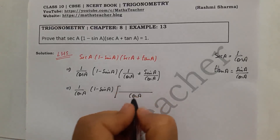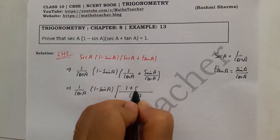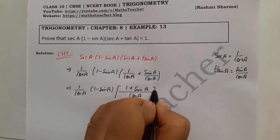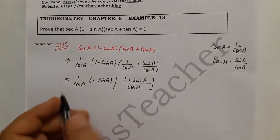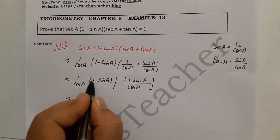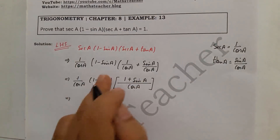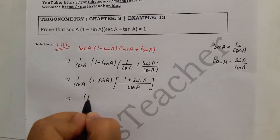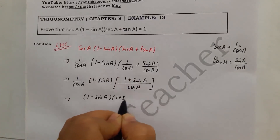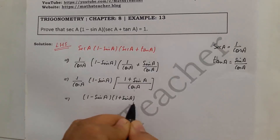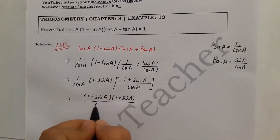When both denominators are the same, we combine the numerators: 1 plus sin a over cos a. Now we write the full expression: 1 by cos a into (1 minus sin a) into (1 plus sin a) over cos a. The denominator becomes cos a into cos a, which is cos squared a.